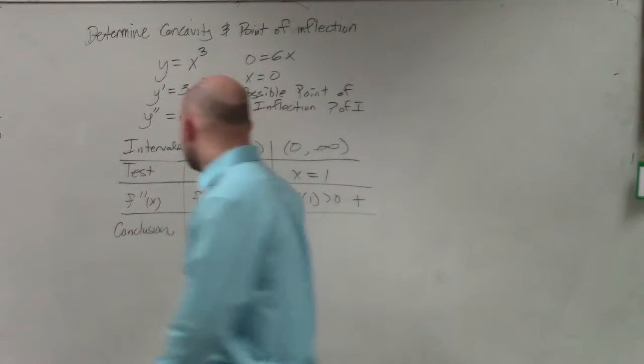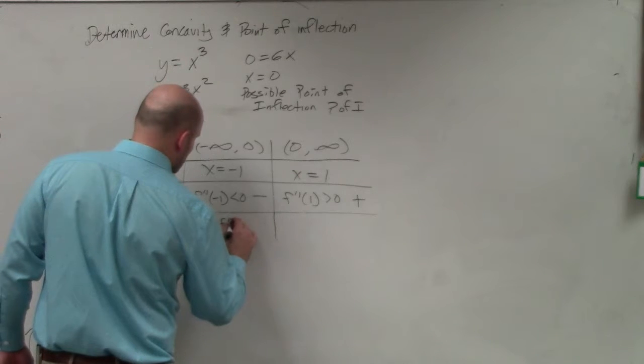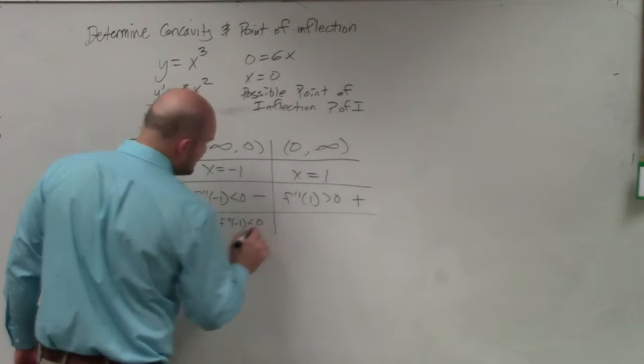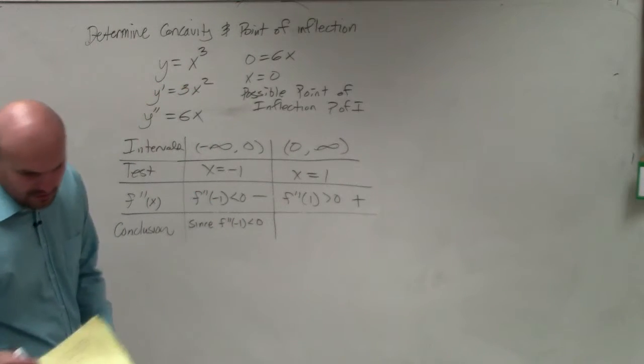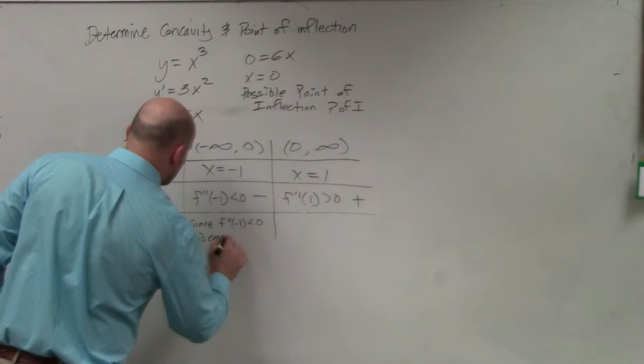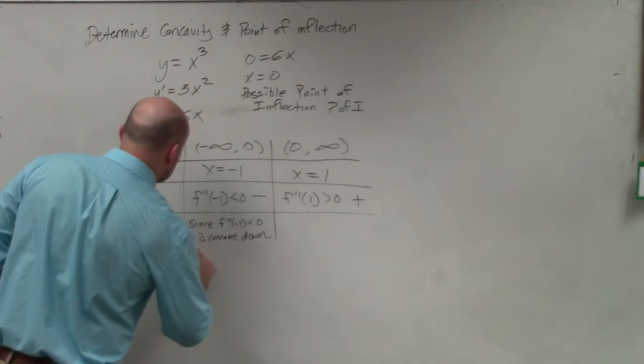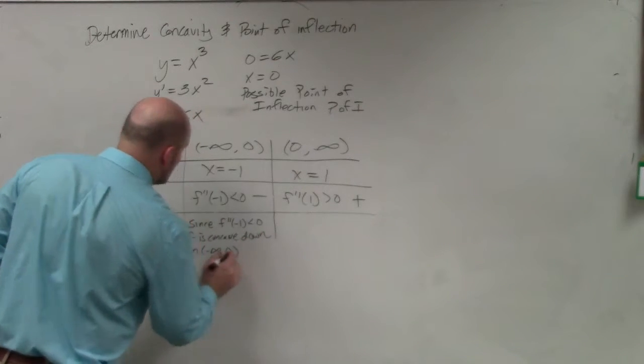So since f double prime of negative 1 is less than 0, f is concave down on negative infinity to 0.